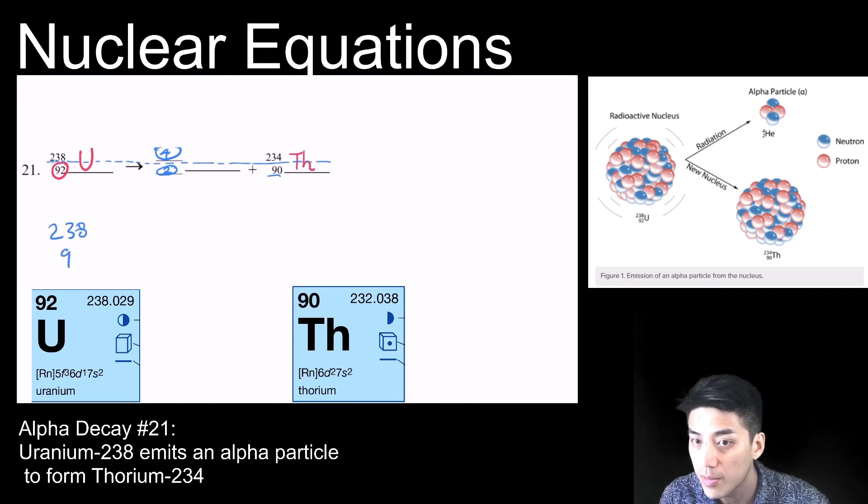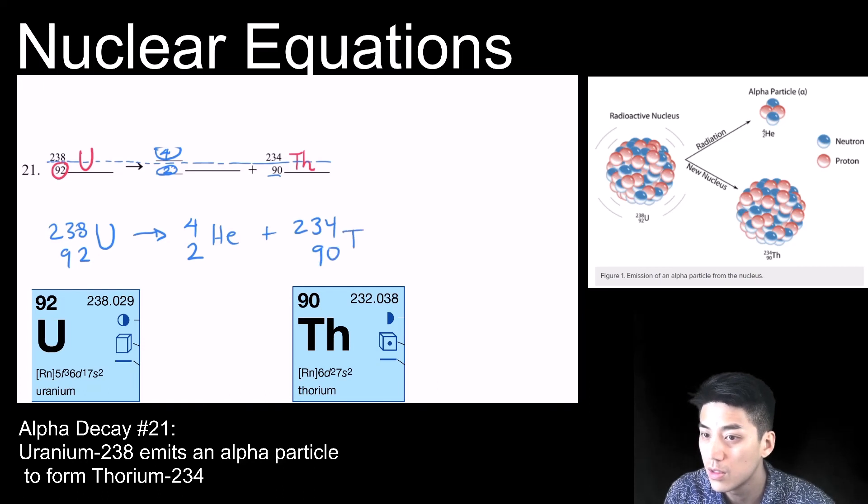So now I'm going to write out my equation again, nice and neat. We have uranium undergoing 4, 2, He undergoing alpha decay to form thorium 234.